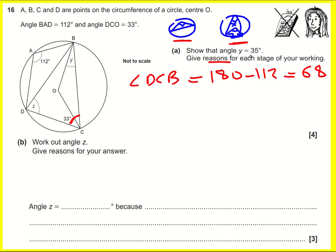That says give reasons for each stage of your working, so I need to write this in words now. Opposite angles in cyclic quadrilaterals add to 180.